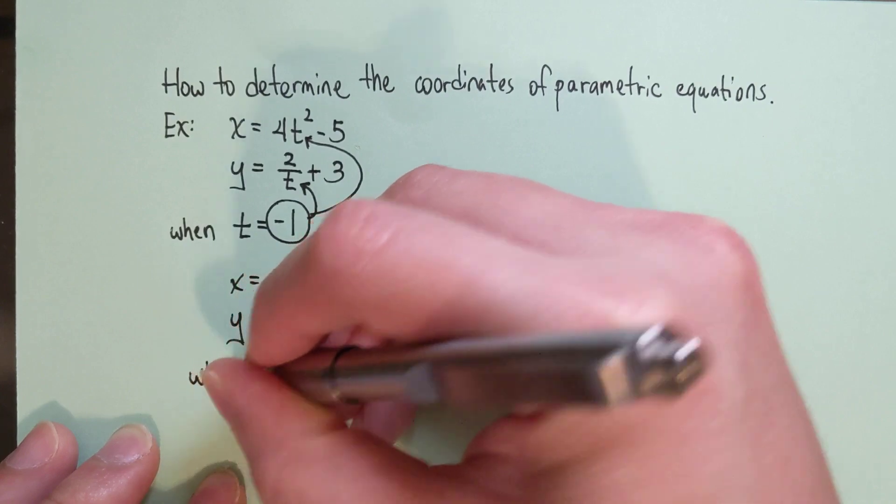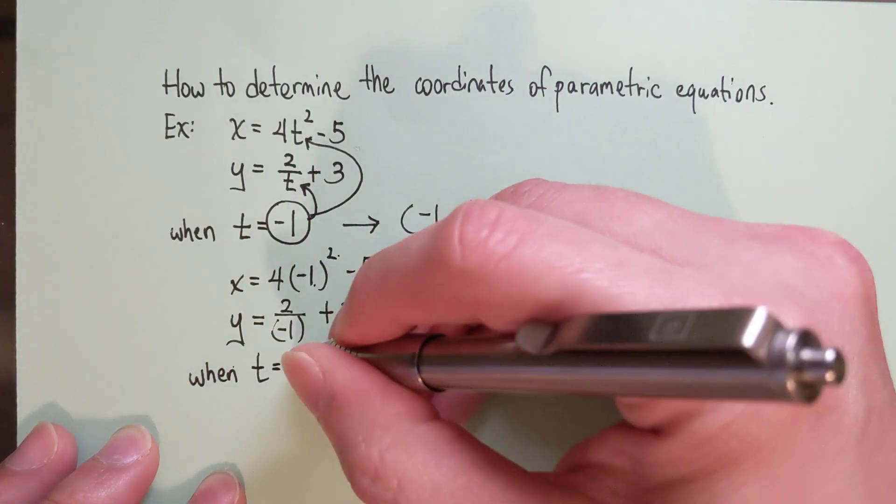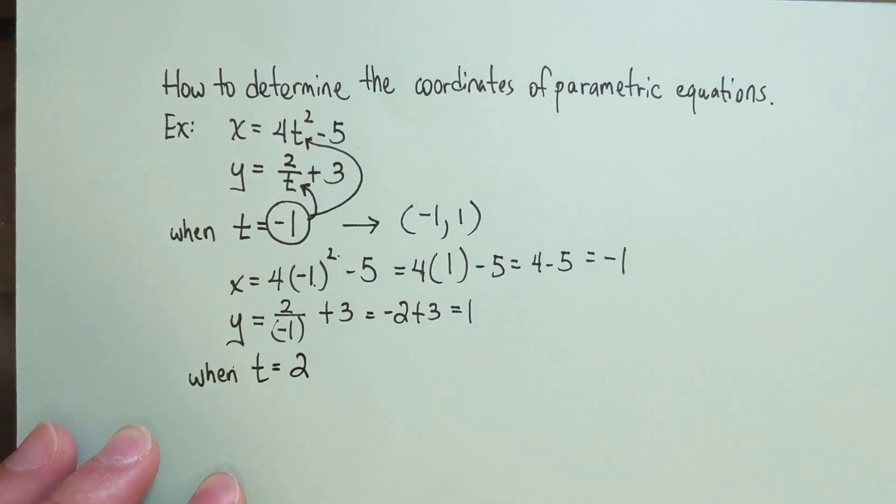When t changes, for example when t equals 2, you'll have a different coordinate.